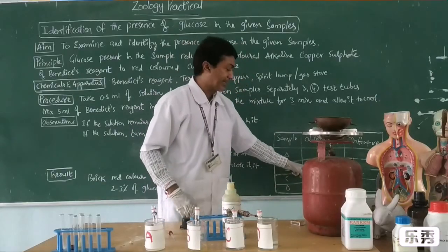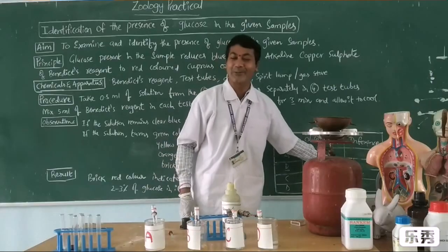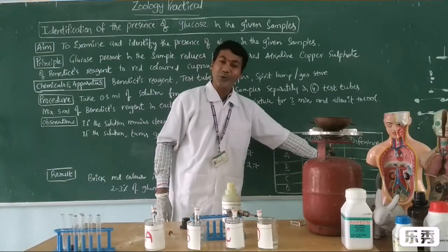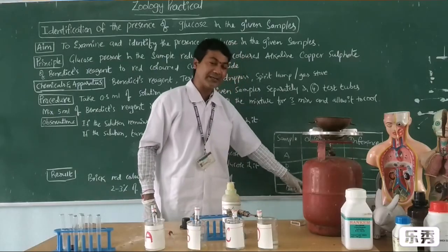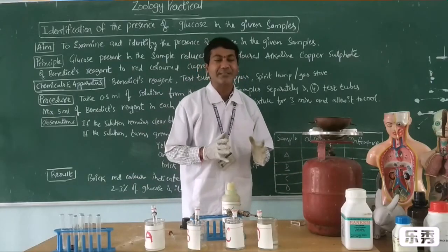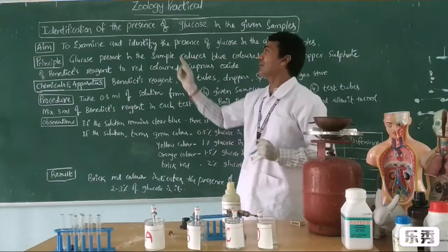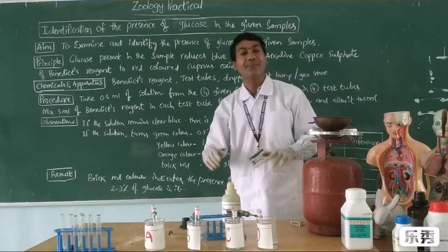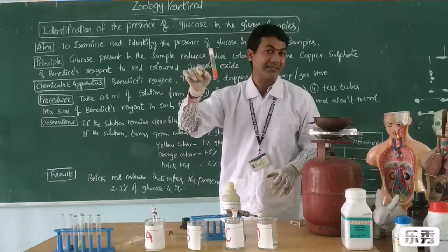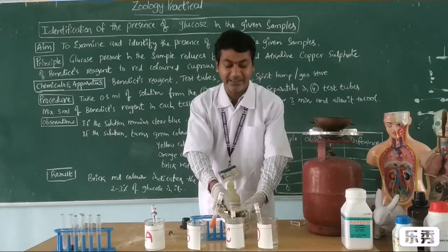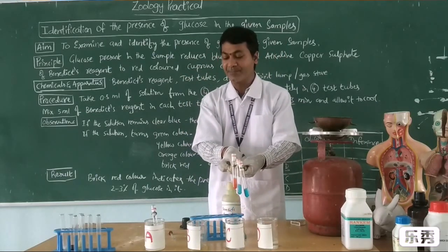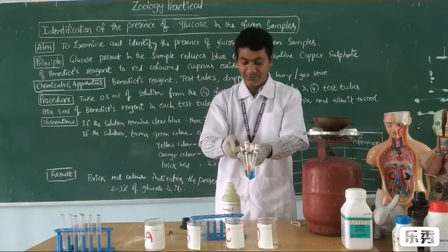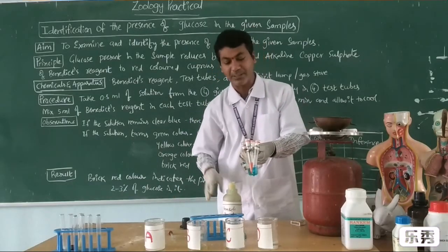B turns into red color — 2% of glucose is present in the sample. C remains blue — no glucose found. D remains blue — no glucose found. This is the result regarding the presence of glucose in the given samples. One test tube turns into reddish color, whereas all the remaining ones are showing the same color of Benedict's solution. Thank you all.